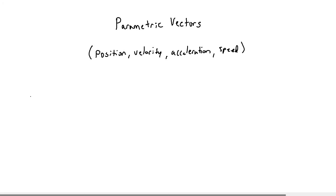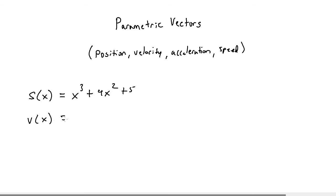You might have had position as s of x — the standard notation for position is usually just s. So let's say s(x) equals x cubed plus 4x squared plus 5. Then when you were trying to calculate velocity, or v(x), velocity is just equal to the derivative of position. So the derivative of x cubed plus 4x squared plus 5 gives you 3x squared plus 8x. And then acceleration, a(x), would be the derivative of velocity or the second derivative of position, giving you 6x plus 8.